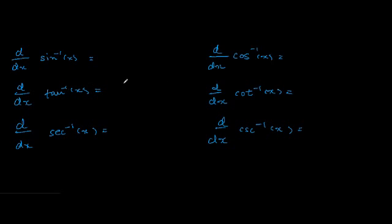Let's start. On the left side you put the three trig functions: sine, tangent, and secant. On the right are the co-functions of those — cosine for sine, cotangent for tangent, and cosecant for secant. And they are all inverses.